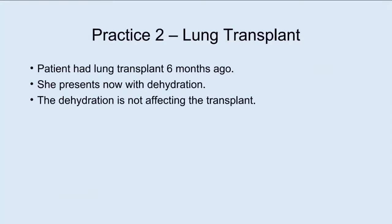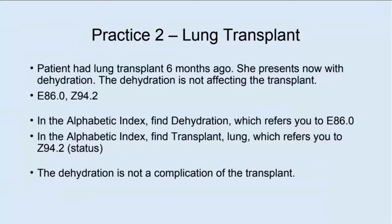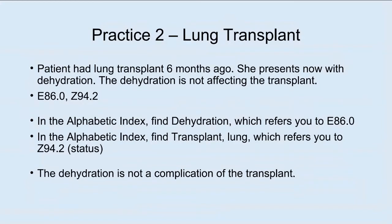Practice two — lung transplant: Patient had a lung transplant six months ago. She presents now with dehydration. The dehydration is not affecting the transplant. The answer is E86.0 and then Z94.2. The dehydration is not a complication of the transplant. Sometimes it's not always this clear and you have to go back to the physician. In the alphabetic index, find dehydration, which refers you to E86.0. Then find transplant lung, which refers you to Z94.2 — status, meaning no complication.